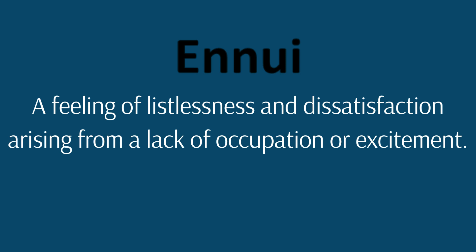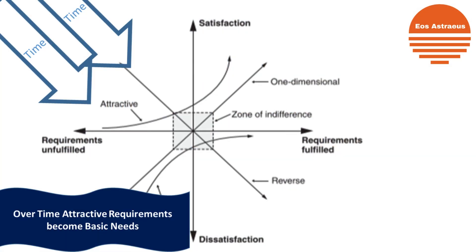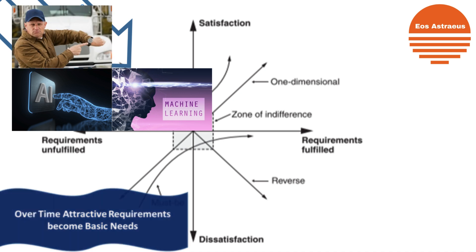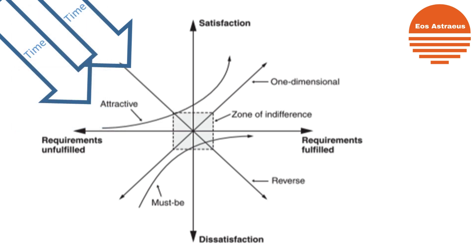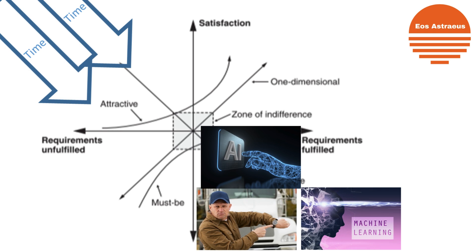Customers could be bored or have heightened requirements over time — requirements do change. One word that summarizes this is ennui: a feeling of listlessness and dissatisfaction arising from a lack of occupation and excitement, which could affect how customers view your requirements over time. Over time, attractive items move to performance requirements, then to basic requirements. That backup camera and CarPlay went from attractive in 2015 to a basic requirement today.